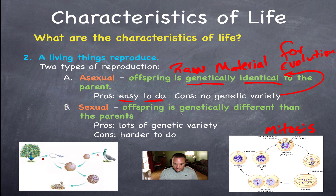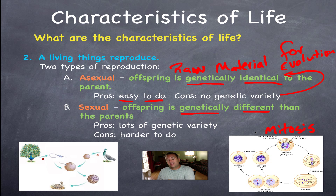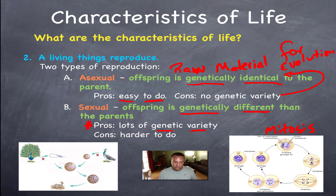Sexual reproduction is the favored version for most living things. The offspring are genetically different — you have a lot in common with your parents because half your genes came from mom and the other half from dad, but you have a unique set of genes. If you have a brother or sister, they'll have a slightly different set of genes because they were also produced by sexual reproduction. The advantage is all that genetic variety — the raw material for evolution. The downside is it's harder to do, requiring two individuals.